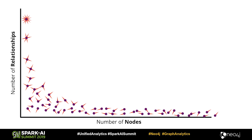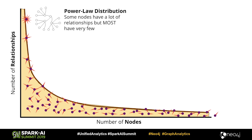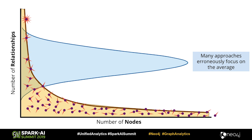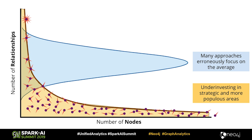What we generally see instead is a quasi-power-law distribution. Up and to the left, there are a few nodes with a lot of connections — your hubs. Towards the bottom, there are a lot of nodes with very few connections. If you're taking an averages approach to your network data, you're missing both the strategic influential items at the top — those hubs — and also where most of your nodes, customers, or genes actually live. You're missing both the top end and the populist low end.